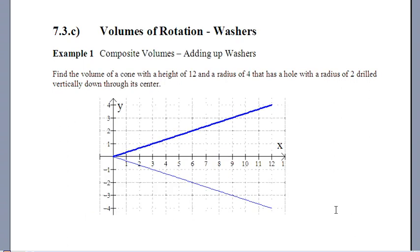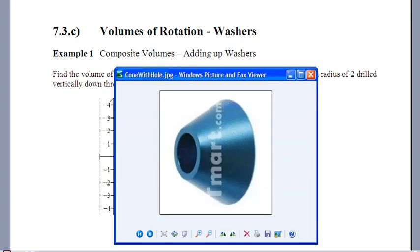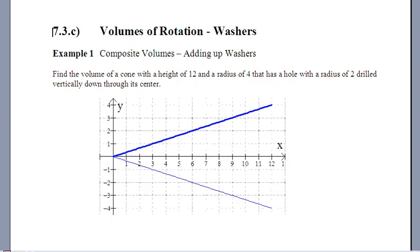Okay, so this one here says find the volume of a cone. It's going to have a height of 12 and a radius of 4, but it has a hole of radius 2 drilled vertically down through its center. When we're done, we're going to end up with a shape that looks pretty much like that, almost exactly, actually. It won't actually go all the way back to the origin anymore, because the part all out here will have been drilled away. There'll be this air space in the center.